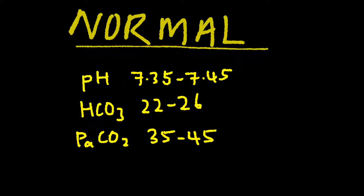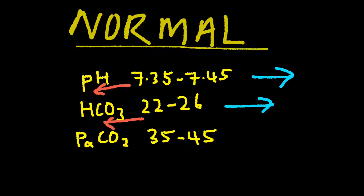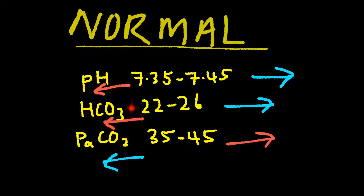As a recap, here are the normal values for the arterial blood gas. Anything above 7.45 and 26 for HCO3 is alkaline, and anything lower than 7.35 and 22 for HCO3 is acidic. The reverse is true for PaCO2, where anything more than 45 is acidic and anything less than 35 is alkaline. HCO3 depicts the metabolic aspect and PaCO2 depicts the respiratory aspect of this acid-base.